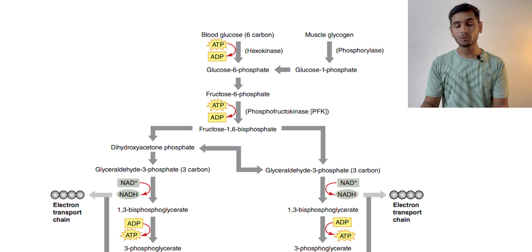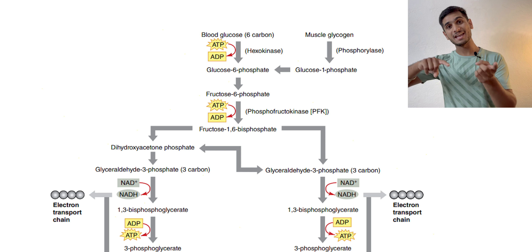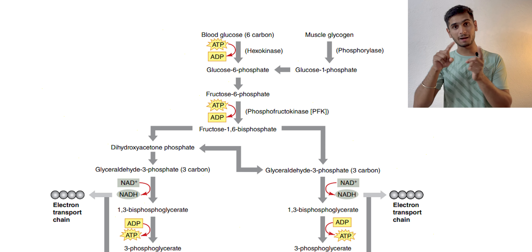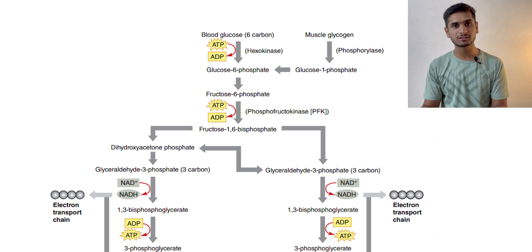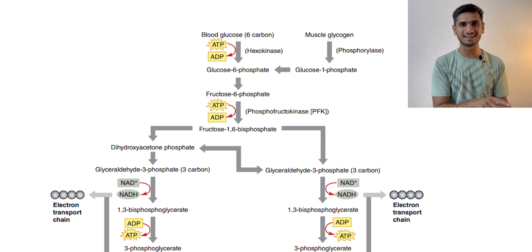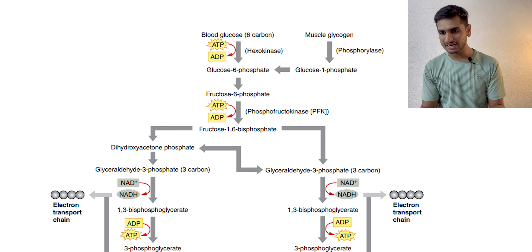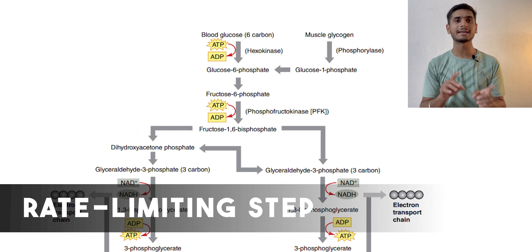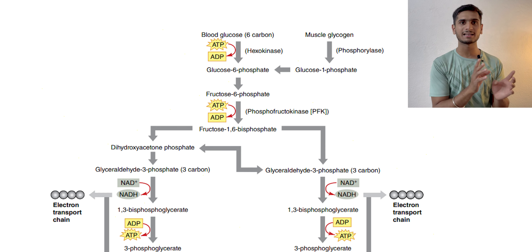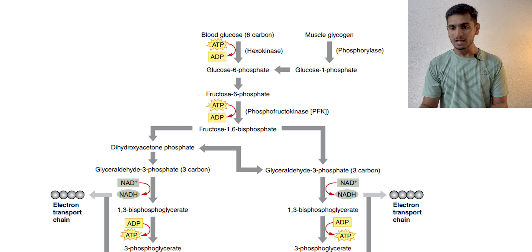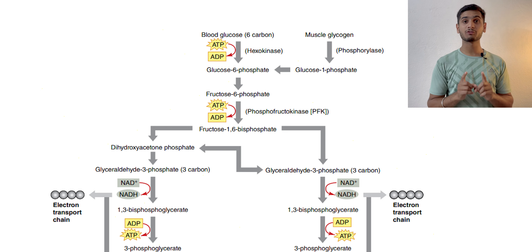On the other hand, if the energy pathway is from muscle glycogen, the hexokinase step is bypassed and you directly move on to the next step, which is the rate-limiting step. This rate-limiting step cannot be skipped at all, because if it doesn't happen, energy production via glycolysis is not going to occur. It is therefore very critical that you have good nutritional status so that muscle glycogen is your main pathway.